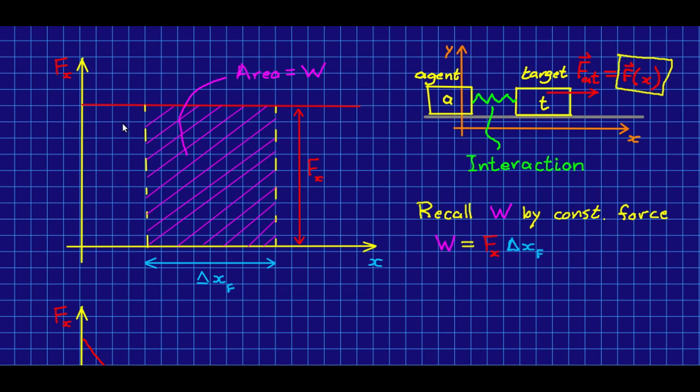And if it's a constant force, then if we graph the force versus the position of the object, it's going to be a horizontal line. And now we can interpret this expression for the work as an area of a rectangle, because this height is just the force and this width is just the displacement.